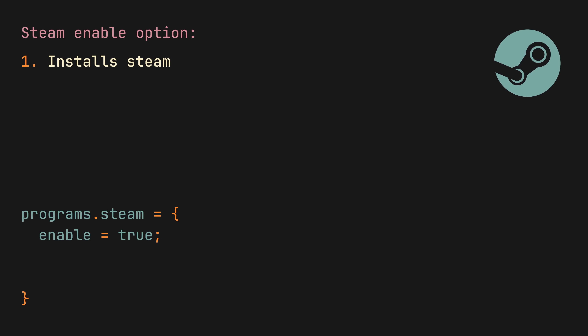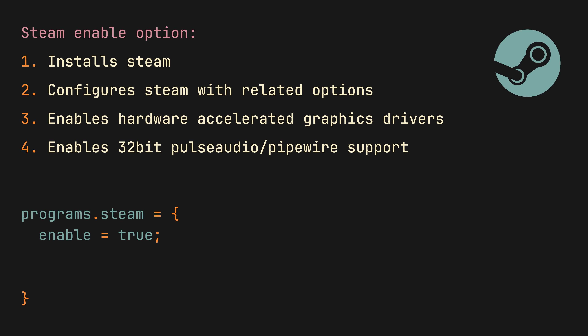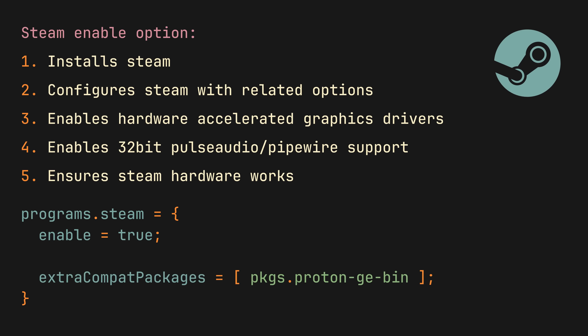And now one more example: programs.steam.enable. You would think that this one simply adds Steam to your system packages and lets you configure it, but it actually also ensures you have the required graphics drivers, sound settings, and even ensures support for Valve's hardware. And one of the related options even lets you install extra Proton packages without messing with any specialized installers and compatibility tool directories. Simply unbelievable. So generally, if there is an enable option for something, you will pretty much always have a better experience using it.